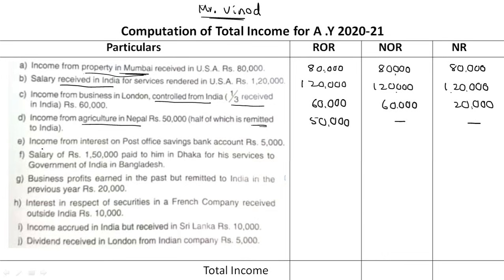Point E: Income from interest on post office savings bank account, Rs. 5,000. Post office savings bank interest is exempted — single account exemption is Rs. 3,500 and joint account is Rs. 7,000. Since Rs. 5,000 is received, Rs. 3,500 is exempted and Rs. 1,500 is taxable.